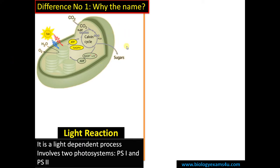The organelle involved in photosynthesis is the chloroplast. Inside the chloroplast there is grana. This stack is called grana and the individual units are called thylakoid. Sunlight strikes on these thylakoid sacs.